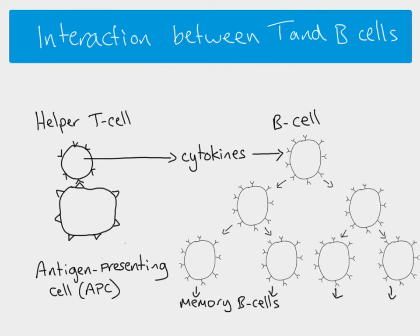The cytokines help the B cell to undergo proliferation and differentiation more quickly, so memory B cells and plasma cells can be produced faster. For this to happen, the B cell will usually also have to have encountered the same antigen as the helper T cell. The basic point is that helper T cells release cytokines which stimulate B cells to divide and differentiate.